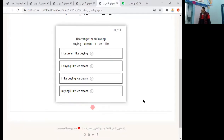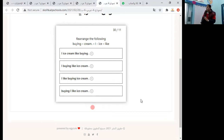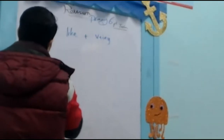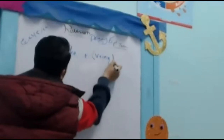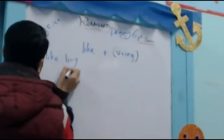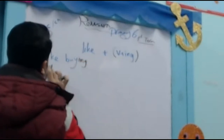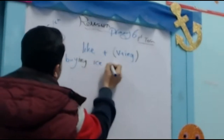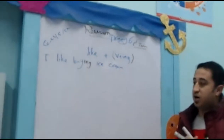Rearrange the following: buying, cream, I, ice. The answer is: I like buying ice cream. Pay attention, look at the board. After 'like' we put the verb with -ing. Like + verb + ing. I like buying ice cream.